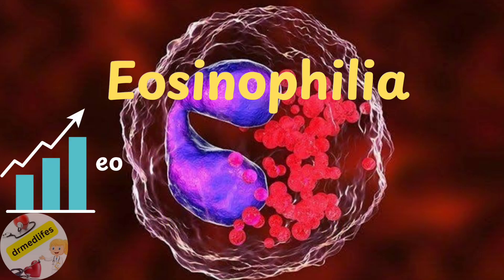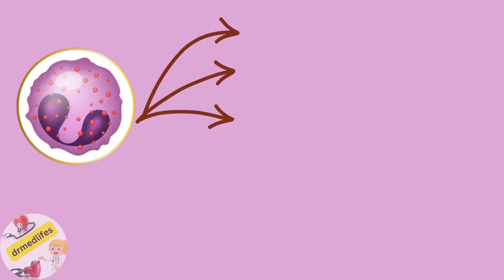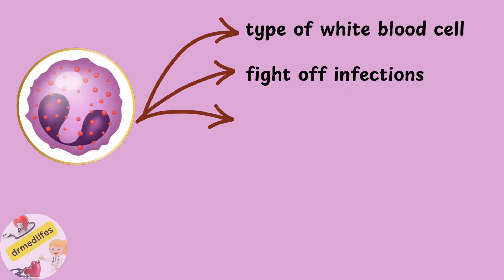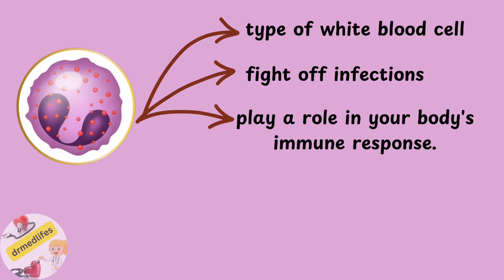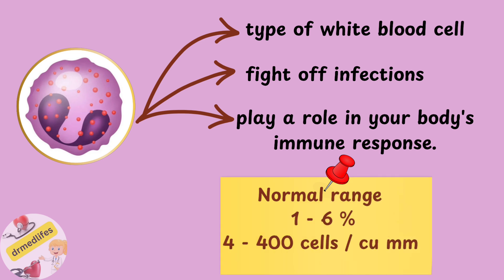Eosinophilia refers to a higher level of eosinophils in the tissue or body. Eosinophils are a type of white blood cell that helps to fight off infections and play a role in your body's immune response. The normal range of eosinophils is 1 to 6 percent, that is 4 to 400 cells per cubic millimeter.